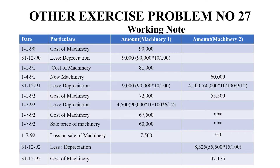I will explain this table. On 1990, the cost of machinery is 90,000 — that is 84,000 plus 6,000. At the end of 1991, they calculated depreciation at 10%: 90,000 × 10/100 = 9,000. The balancing figure is 81,000, which is the cost of machinery on 1991. At the end of 1991, they purchased another machinery — Machinery 2 — for 60,000.